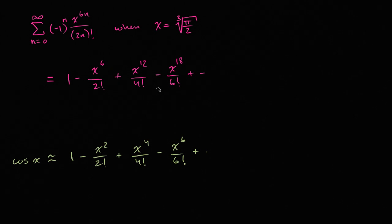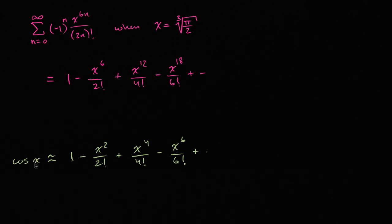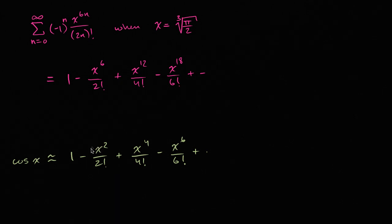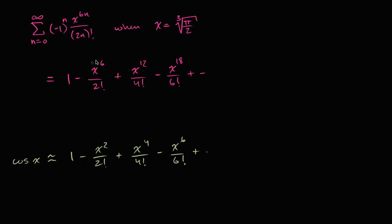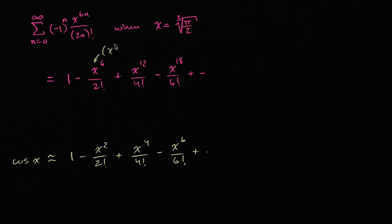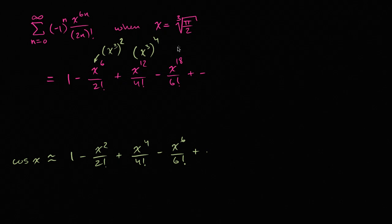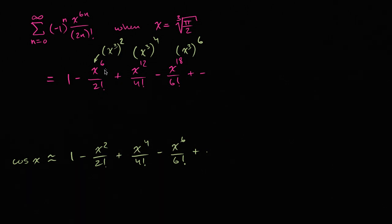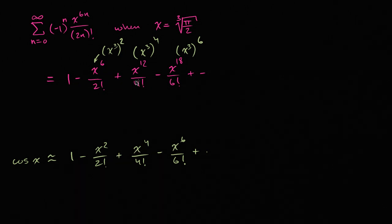Something to think about: how can we replace x with something to match? If I take cosine and replace x with some expression, everywhere we see an x we'd substitute it. Well, x to the sixth is the same as x to the third squared. X to the twelfth is the same as x to the third to the fourth power. X to the 18th is x to the third to the sixth power. So if we replace each x in the cosine series with x to the third, we get exactly this power series.